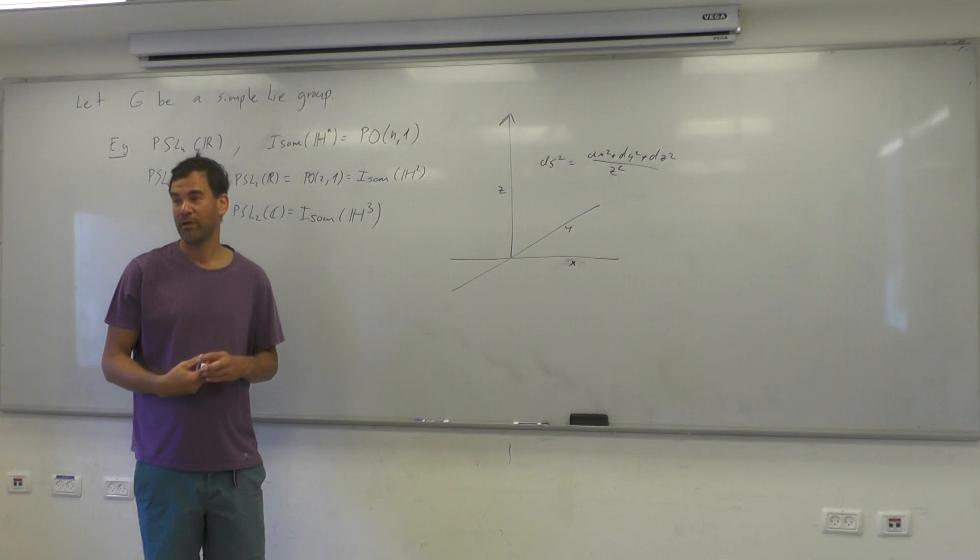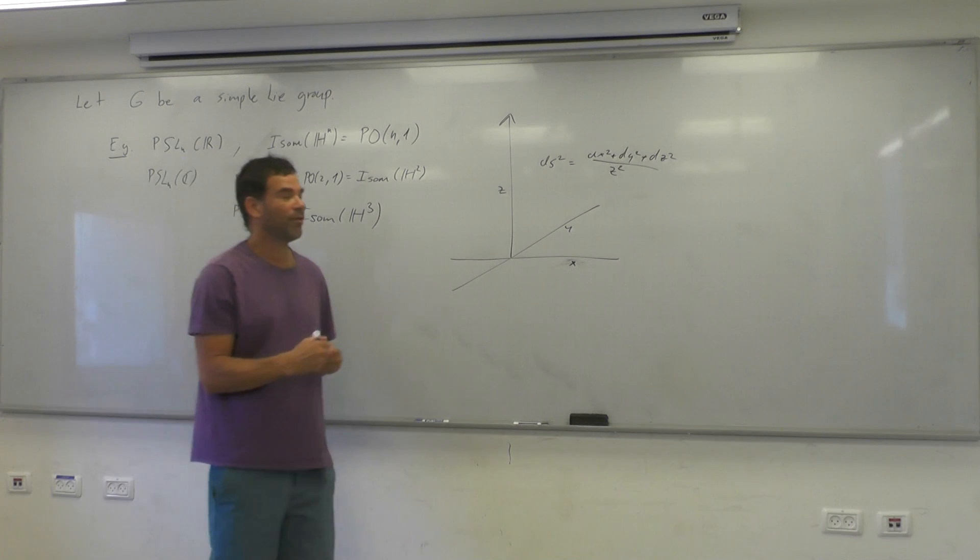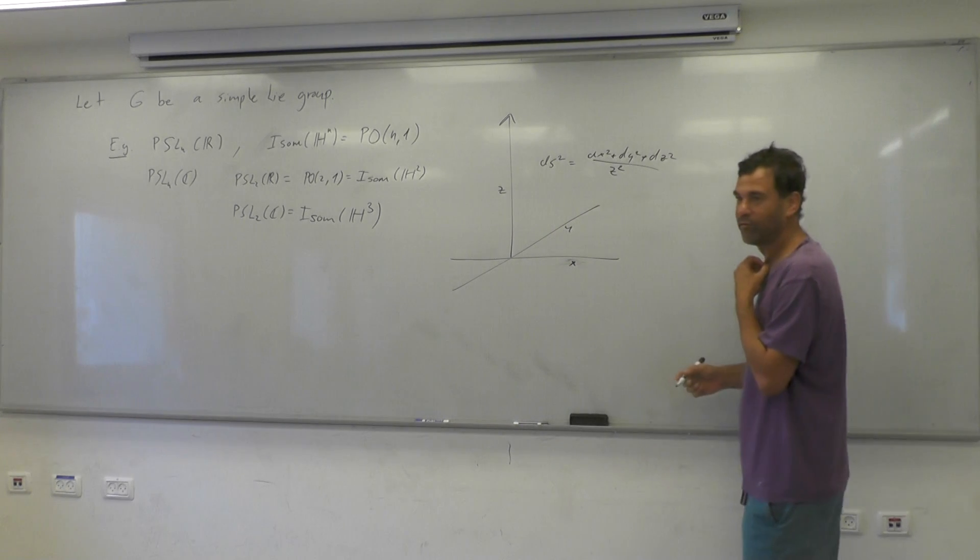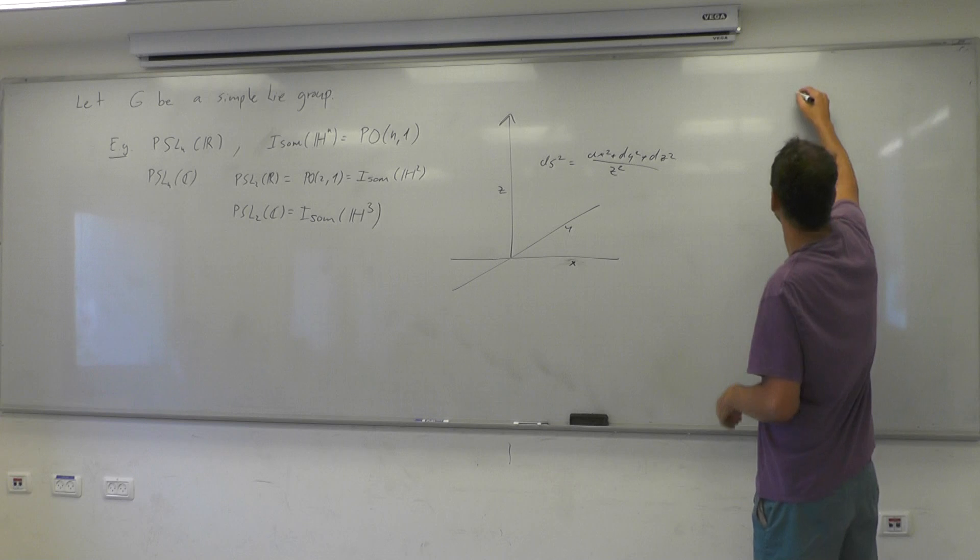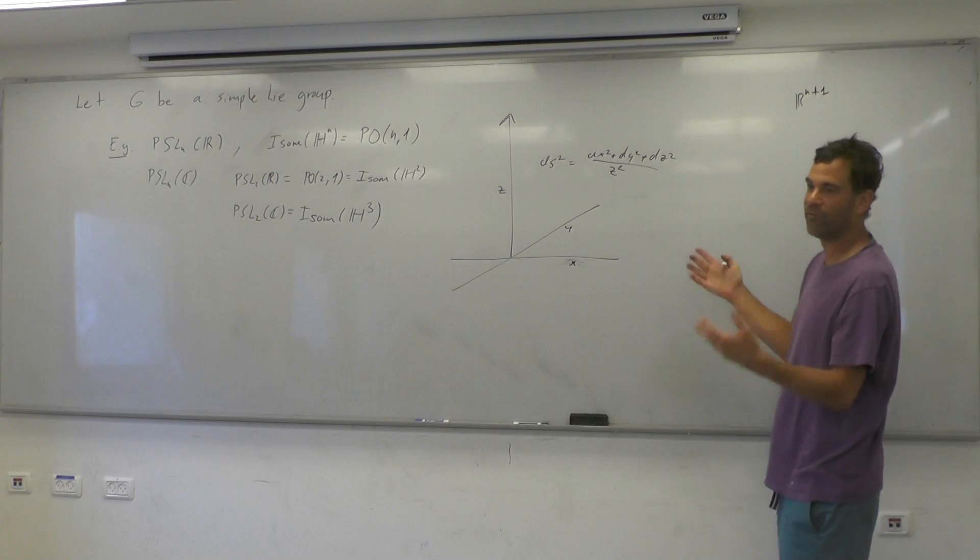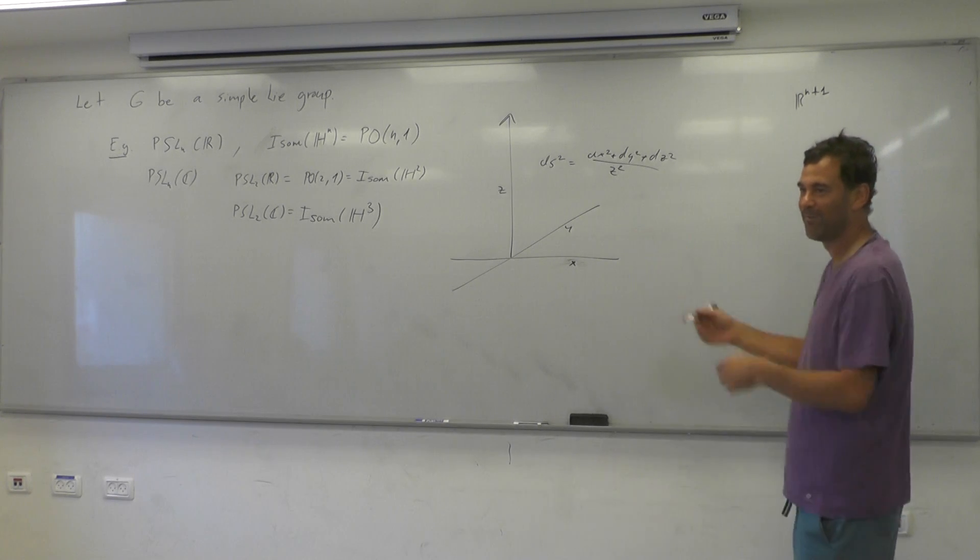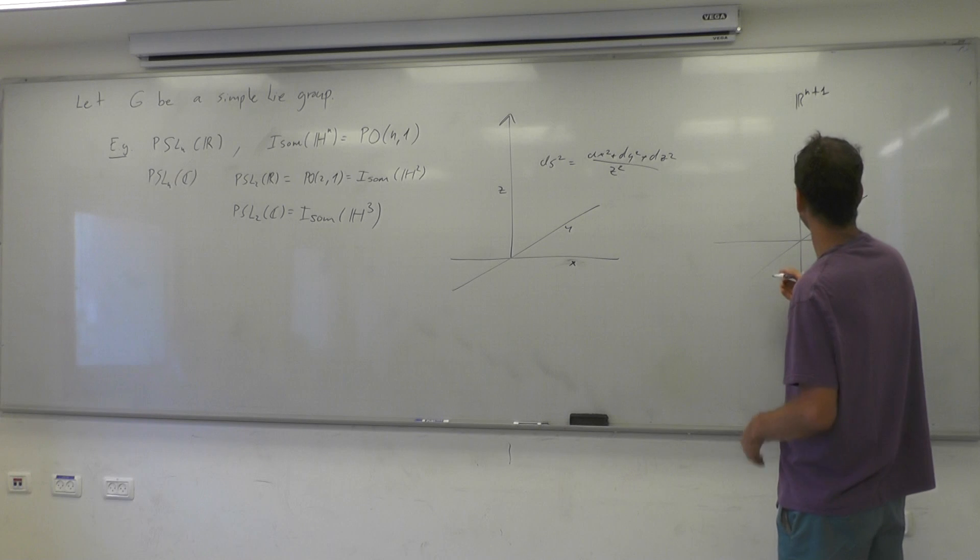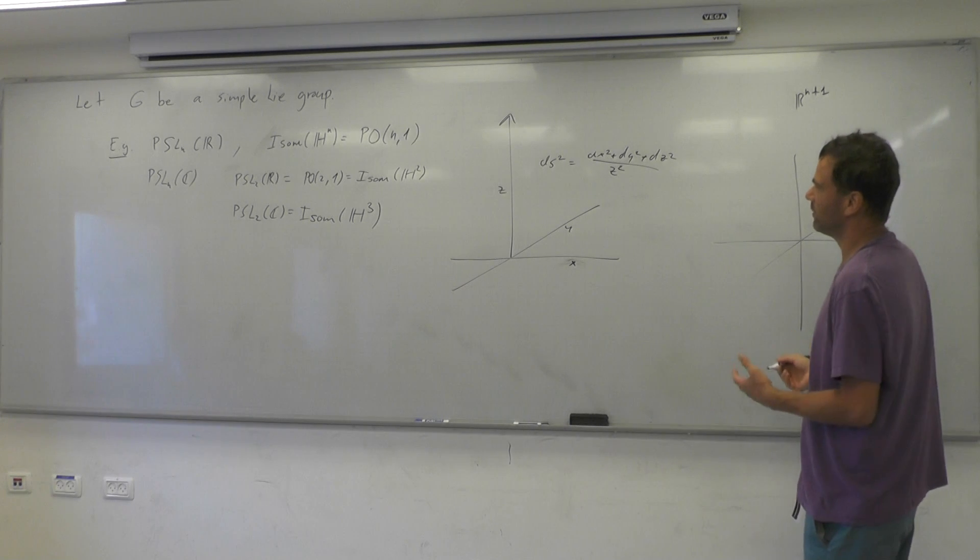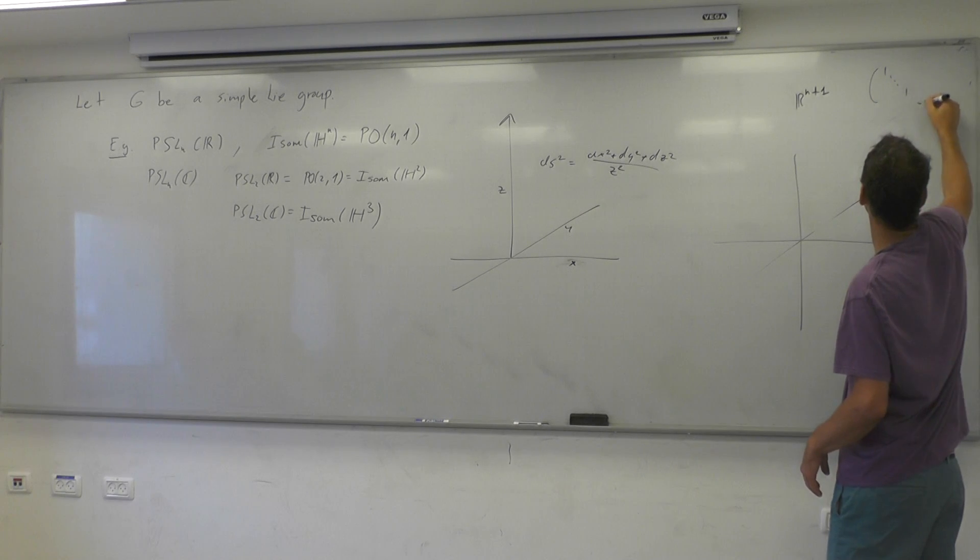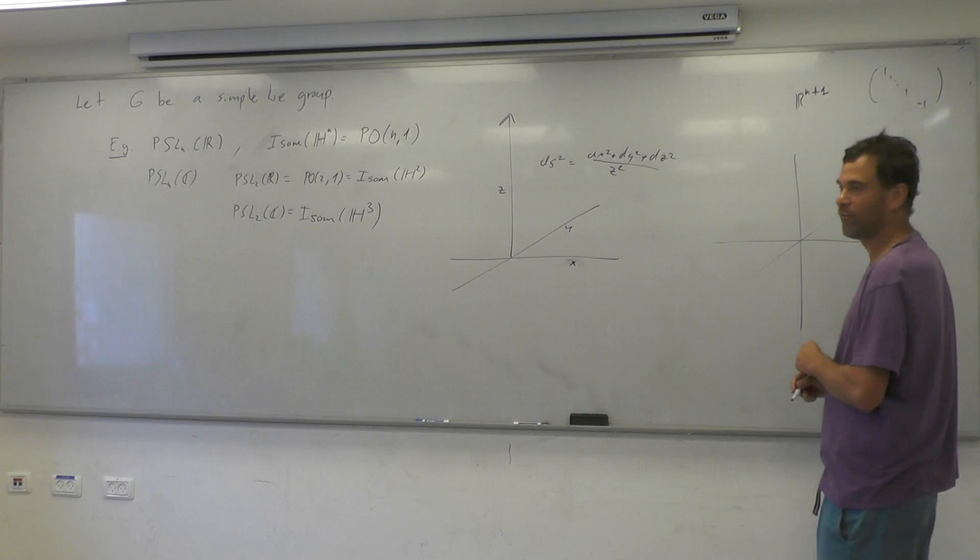And it's the same form with n variables, just the last variable divided by z. Or another form to view it is to look inside R^{n+1}. So let me go back to the two-dimensional case. And inside, you have the form one, one, minus one - so the form one, one, and minus one at the end. So it's a quadratic form, and you look at...